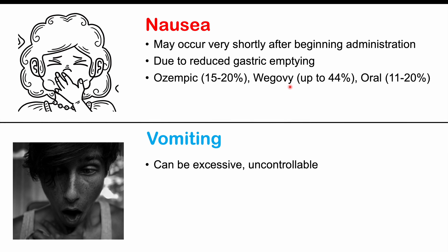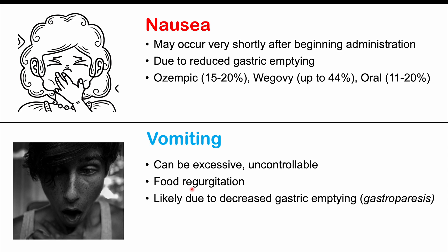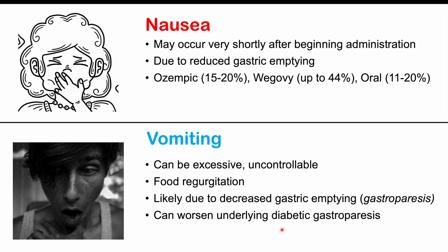Along with nausea, vomiting can occur and may be excessive and uncontrollable for many hours. Patients often report regurgitating undigested food, again due to decreased gastric emptying. In patients with an underlying gastroparesis — a paralysis of the stomach — semaglutide will worsen their gastric emptying issues. This is particularly concerning for diabetic patients who already have diabetic gastroparesis, leading to worsened nausea and vomiting. Wegovy accounts for up to a quarter of patients experiencing vomiting.